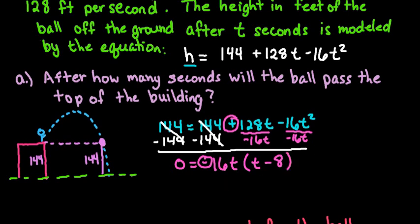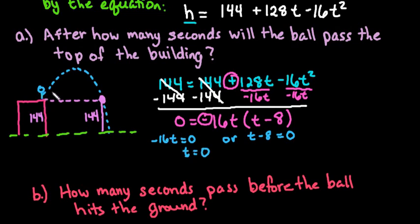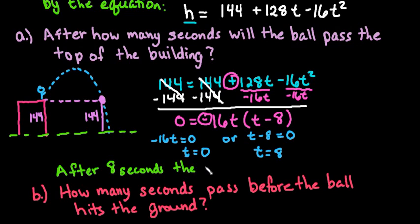Now we take both of our equations and set them equal to zero. So either negative 16t equals 0, or t minus 8 equals 0. We end up with t equals 0 — that's our initial throw, when we threw it from the building — and t equals 8. So after 8 seconds the ball will be even with the top of the building again.